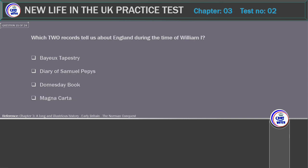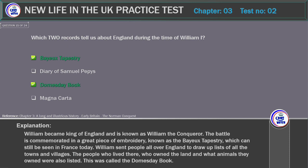Which two records tell us about England during the time of William I? Options: Bayeux Tapestry, Diary of Samuel Pepys, Domesday Book, Magna Carta. Correct answer: Bayeux Tapestry and Domesday Book. Explanation: William became King of England, known as William the Conqueror. The battle is commemorated in the Bayeux Tapestry, which can still be seen in France today. William also sent people all over England to draw up lists of all towns and villages, the people, land and animals — this was called the Domesday Book.